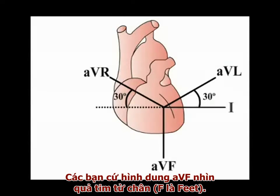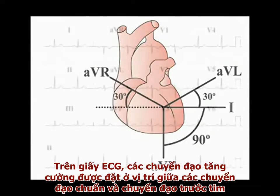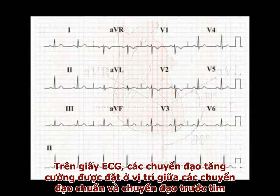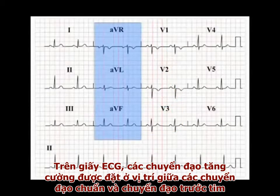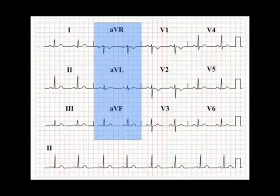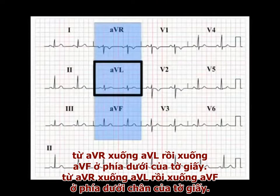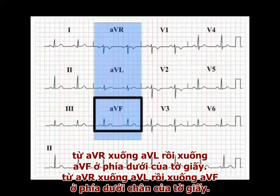Think of AVF as looking straight up at the heart from the feet — F is for feet. In the ECG readout, recordings from the augmented leads are positioned between the standard leads and the chest leads, from AVR to AVL, and down to AVF at the foot of the page.